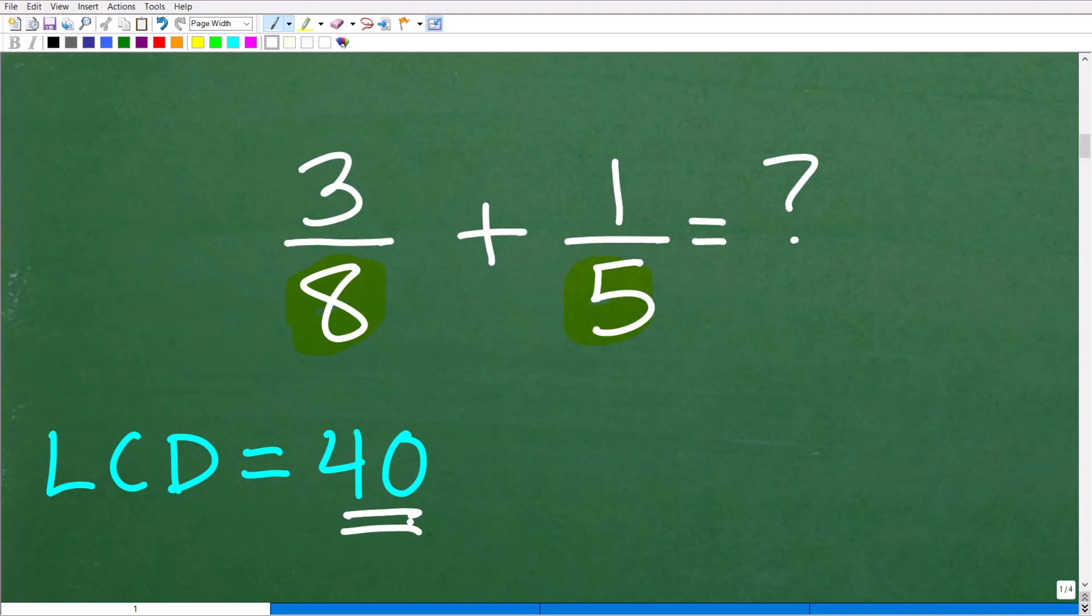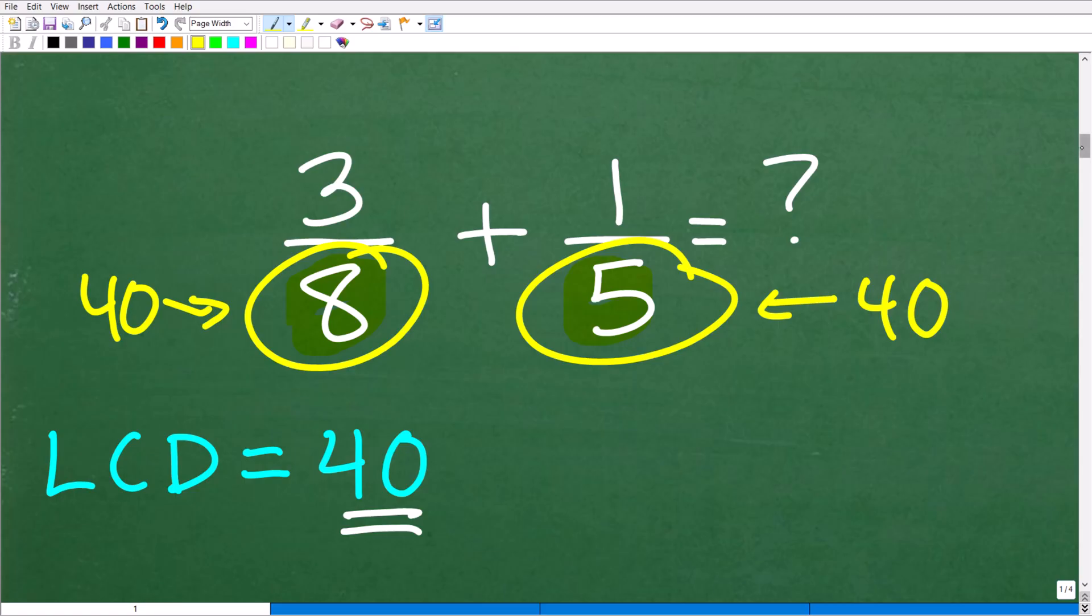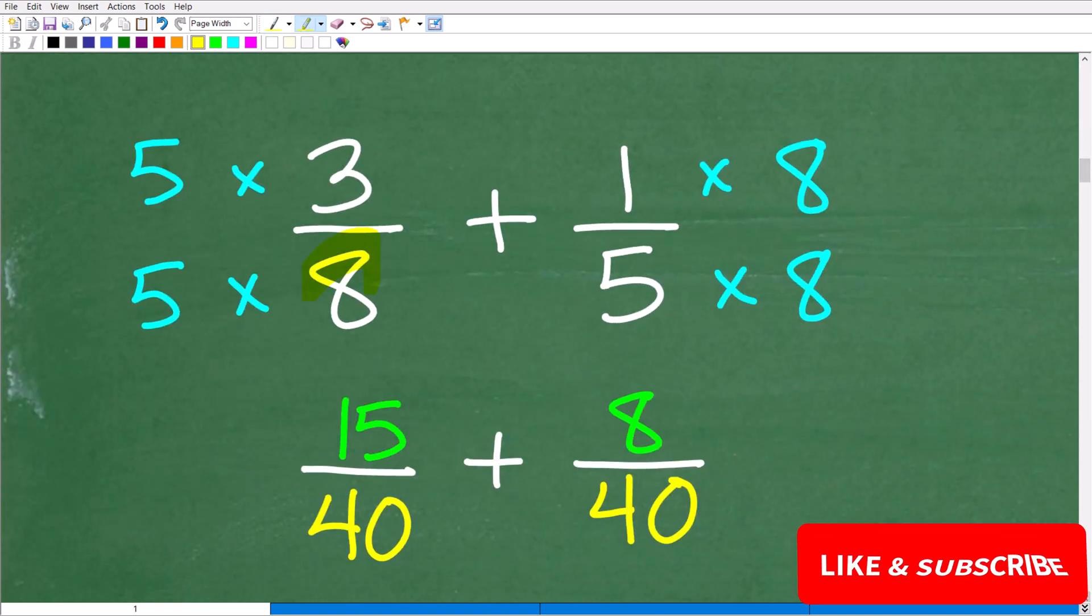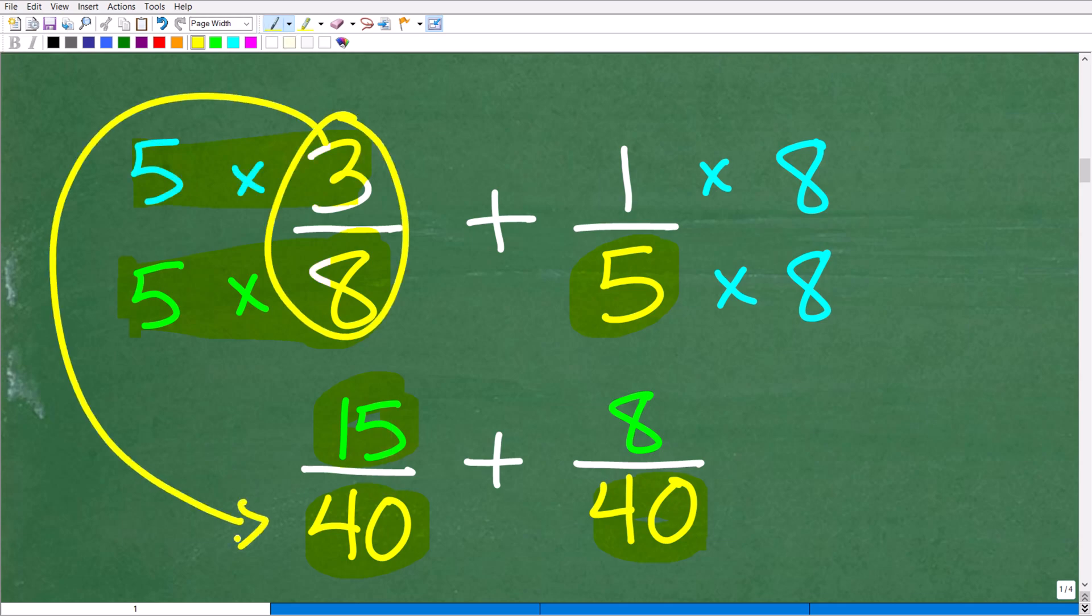The lowest common denominator is 40, meaning we need to rewrite these fractions such that the denominators down here are both 40. We're going to have to turn the 8 into a 40 and the 5 into a 40. How can I change this 8 into 40? Easy, just multiply it by 5. But if I multiply this 8 by 5, I've also got to multiply this numerator by 5 as well. We have to multiply both the denominator and numerator by 5. So we have 5 times 3, which is 15 over 40.